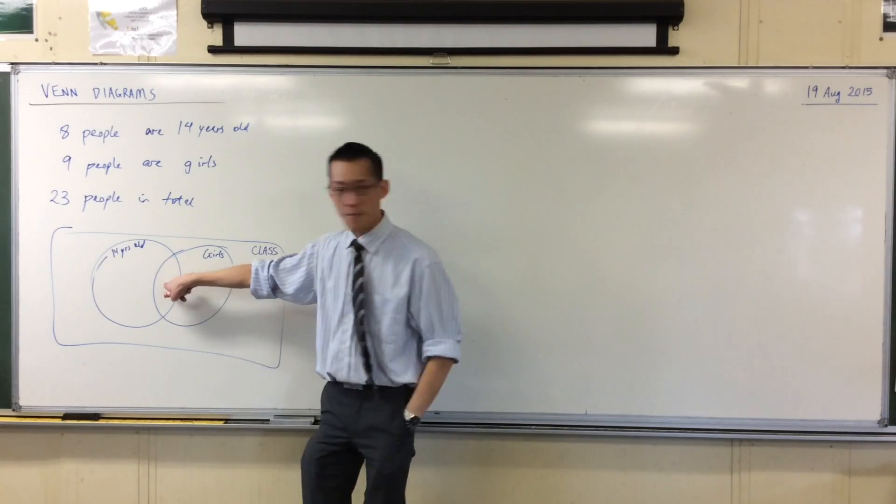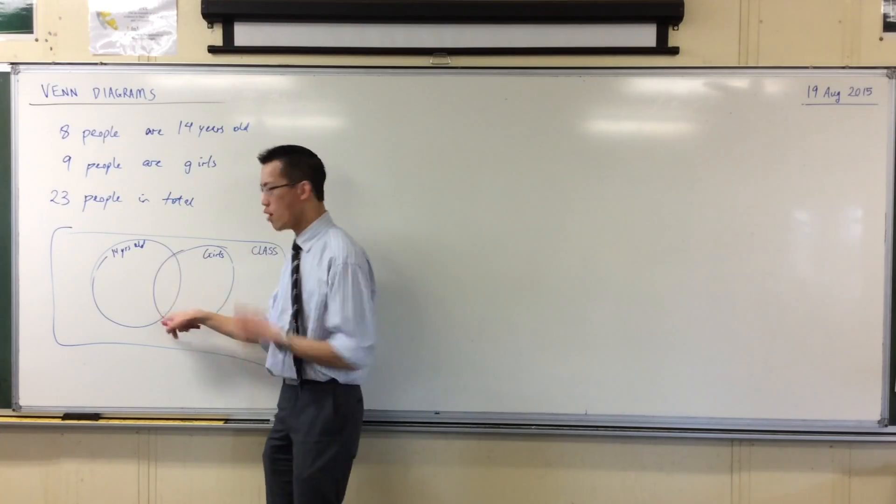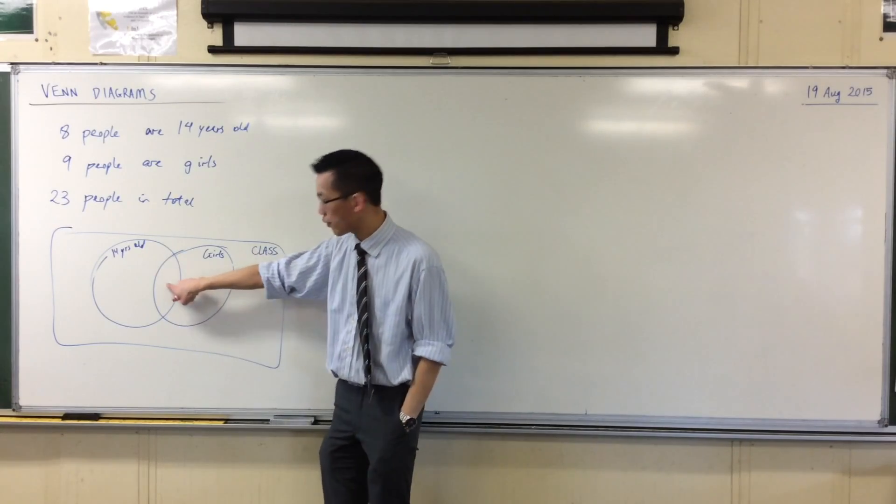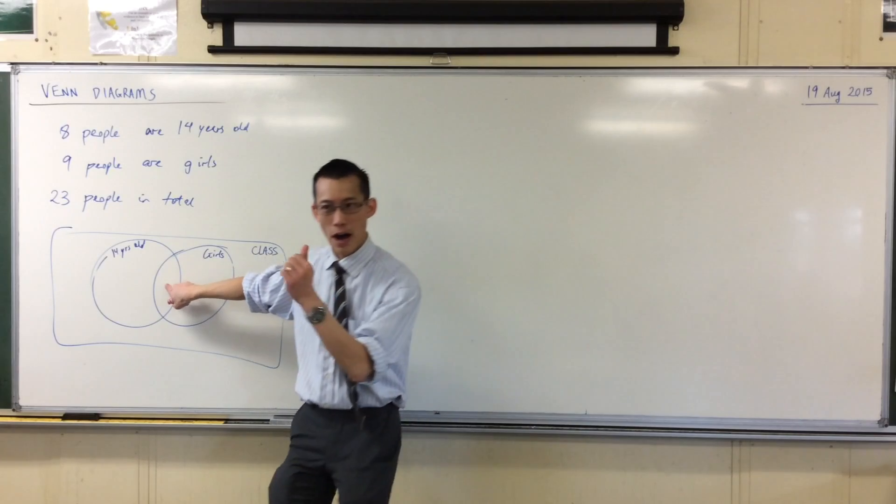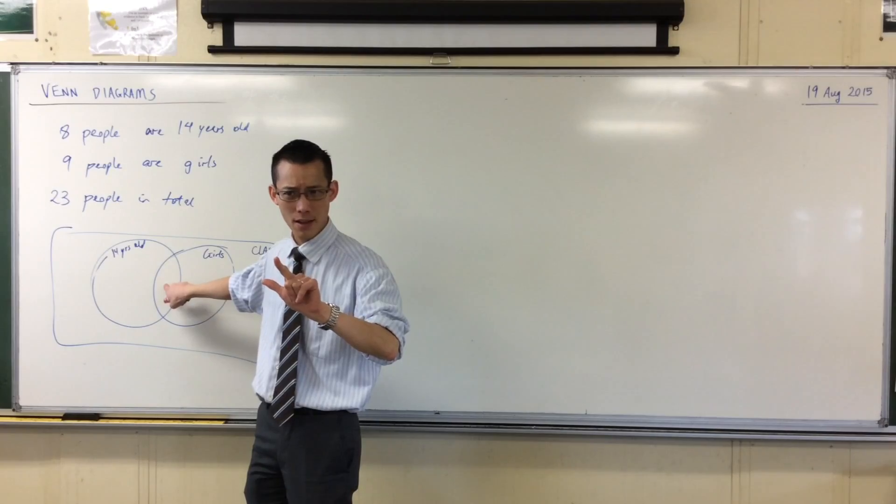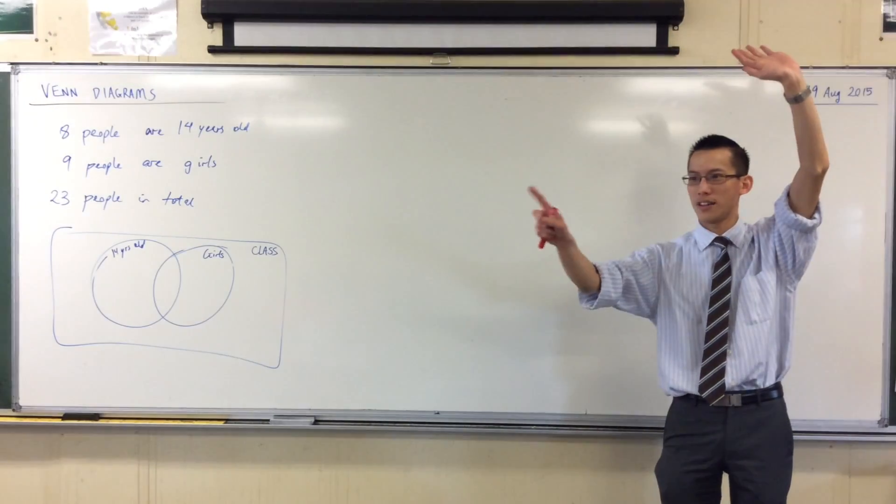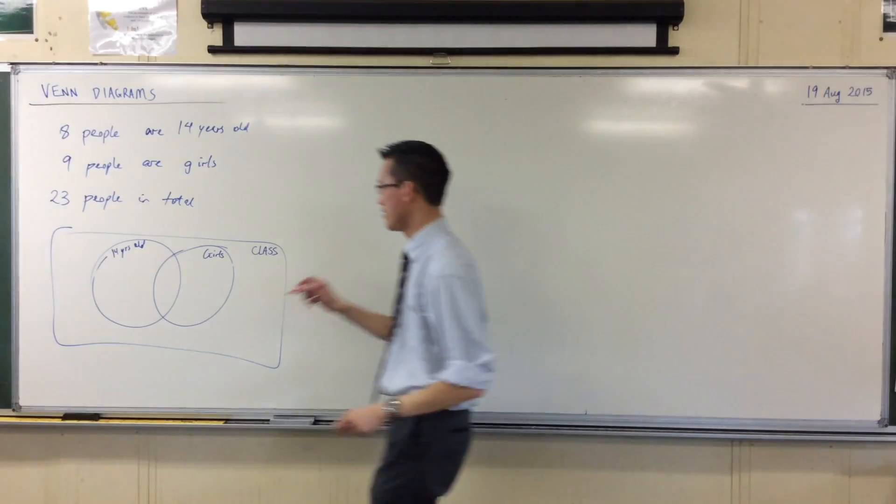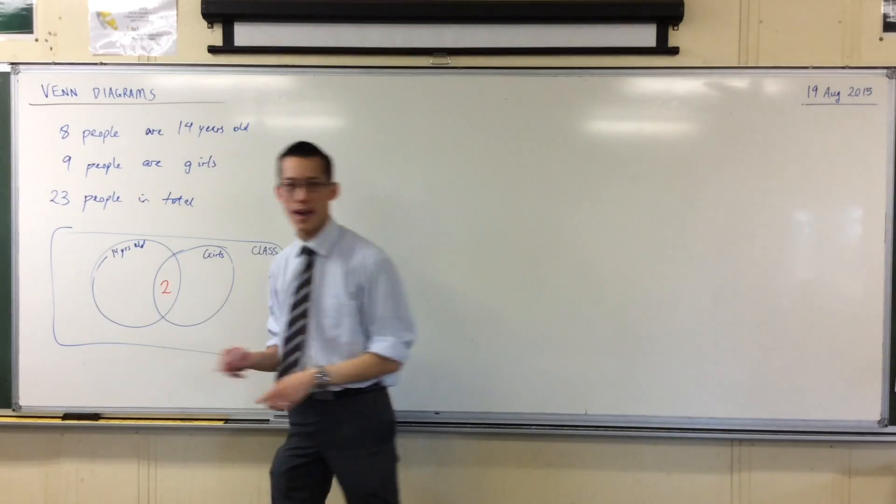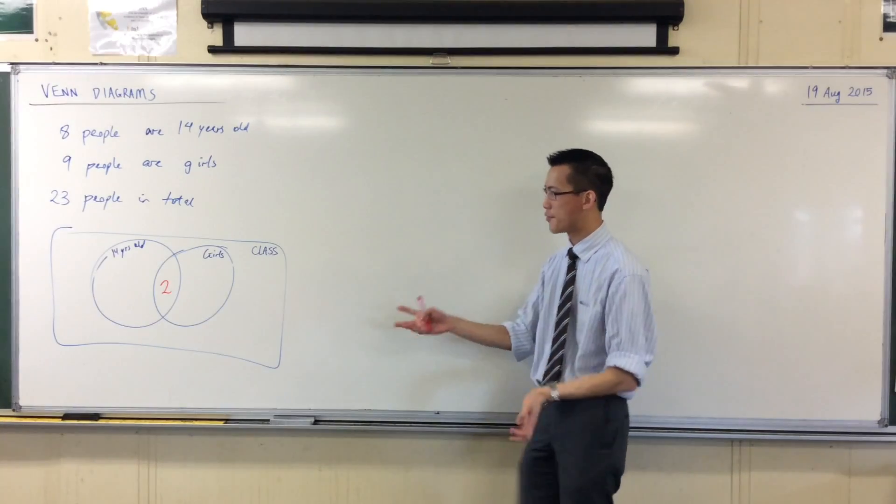Let's now go right in the middle here. Can you see that this is what I have my finger on, the overlap between the two circles? So if there's a number in there, these people are both girls and 14 years old at the same time. Does that make sense? Hands up, 14 year old girls. How many do we have? One, two. Two, perfect. Thank you, hands down. So let's all put two there in the middle. That's the size of that set of people.